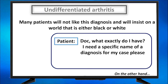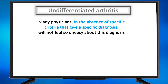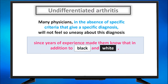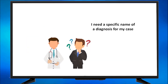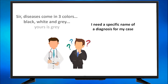On the other hand, many physicians, in the absence of specific criteria that give a specific diagnosis, will not feel so uneasy about this diagnosis, since years of experience made them know that in addition to black and white, gray also and definitely exists. So when a patient tells me 'I need a specific name of a diagnosis for my case' and he has undifferentiated arthritis, I will tell them: 'Sir, diseases come in three colors — black, white, and gray. Yours is gray.'